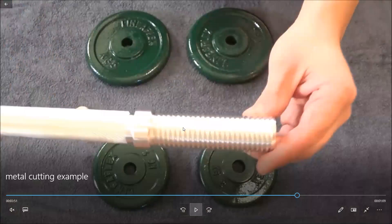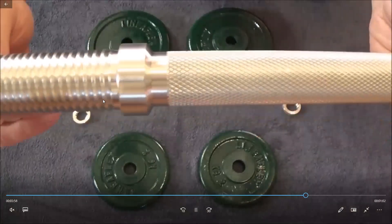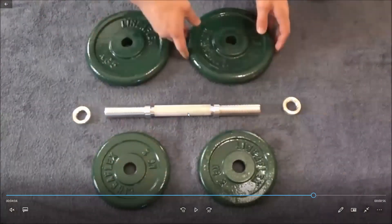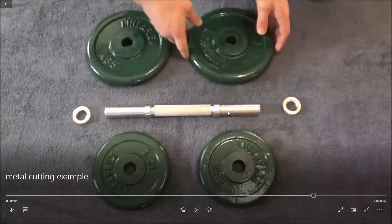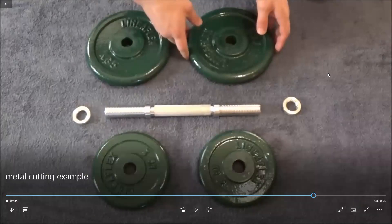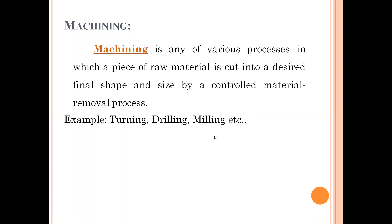This is the final object. So you can observe that by removing some material from the base metal we get this final desired part. We have done some operations to convert the raw material into the desired part — this complete process is called machining. Machining is a process of converting raw material into a desired part by following a controlled material removal process. Examples include turning, drilling, milling, grinding, and many other operations.